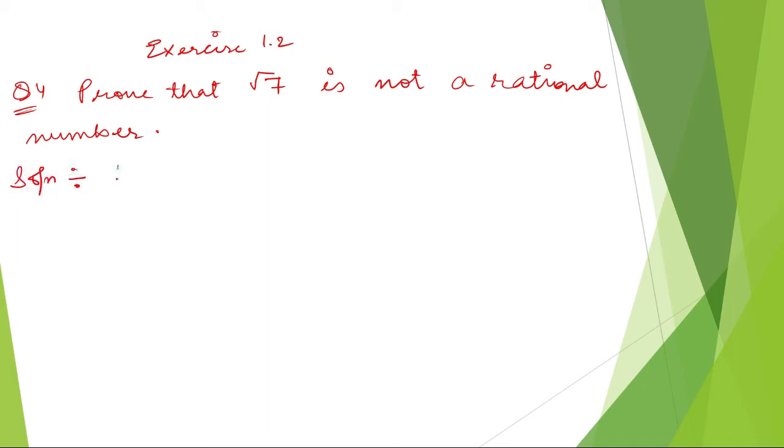Solution. Okay, we are to prove that root 7 is not a rational number.